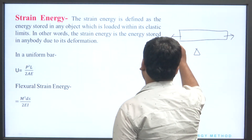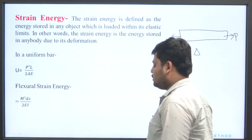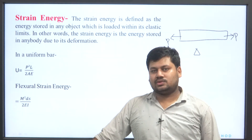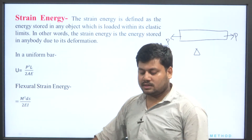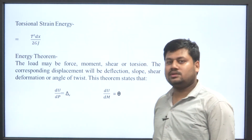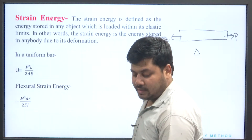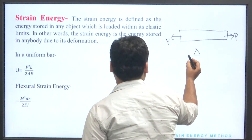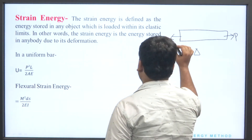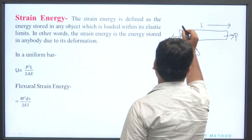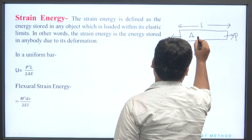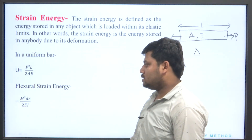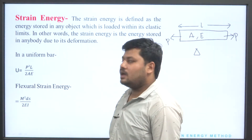Strain energy is stored in the structure. If it is a beam, rod, or section member, basically moment occurs — which is flexural energy. If it is torsion, then it is torsional energy. If we talk about a uniform bar — this is a simple bar which has a force P acting on it, length L, and sectional property A and E — then ultimately the total strain energy becomes P²L / 2AE.